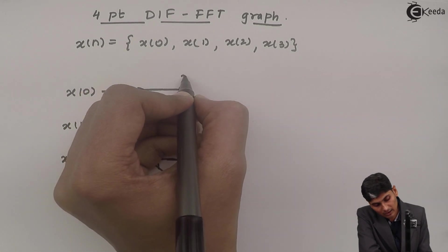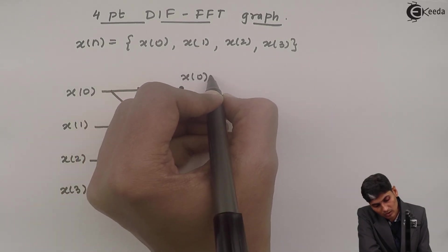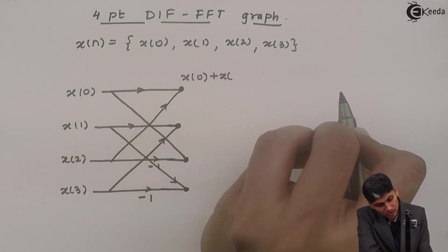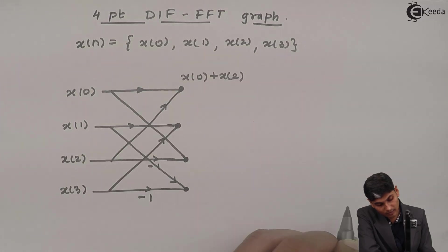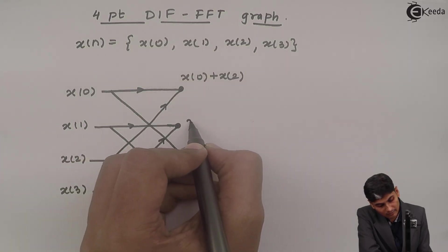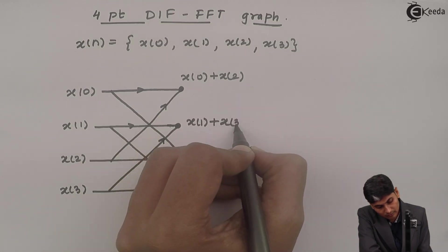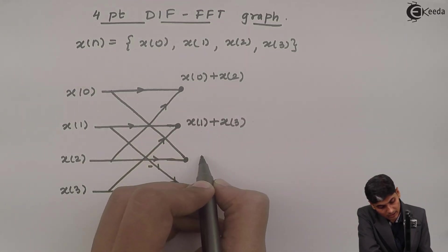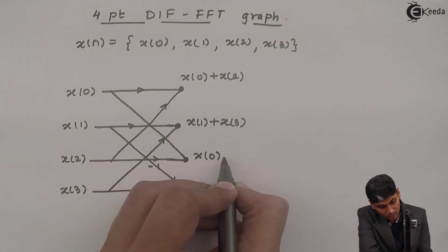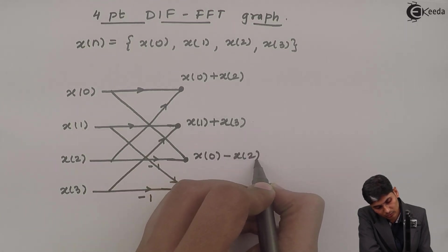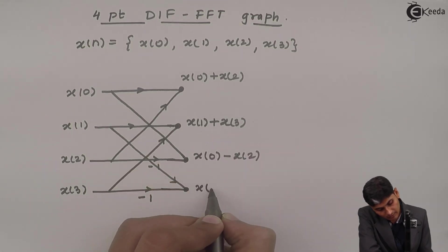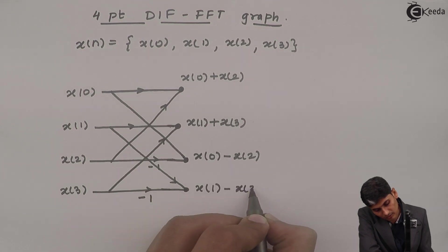So in the first stage, I will have x of 0 added with x of 2. Then at this value, I have x of 1 added with x of 3. At this stage, I have x of 0 subtracted with x of 2. And at this stage, I have x of 1 subtracted with x of 3.